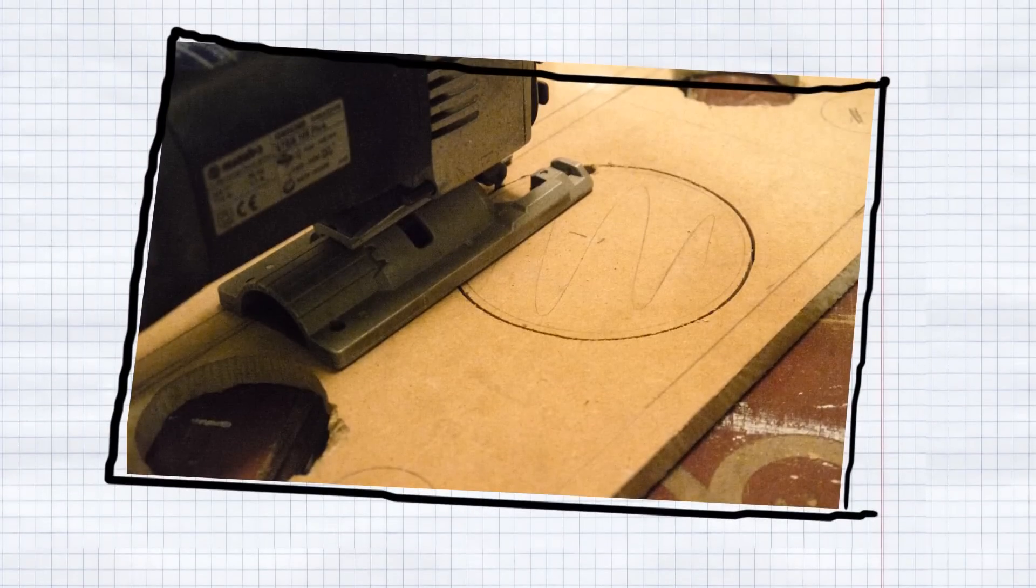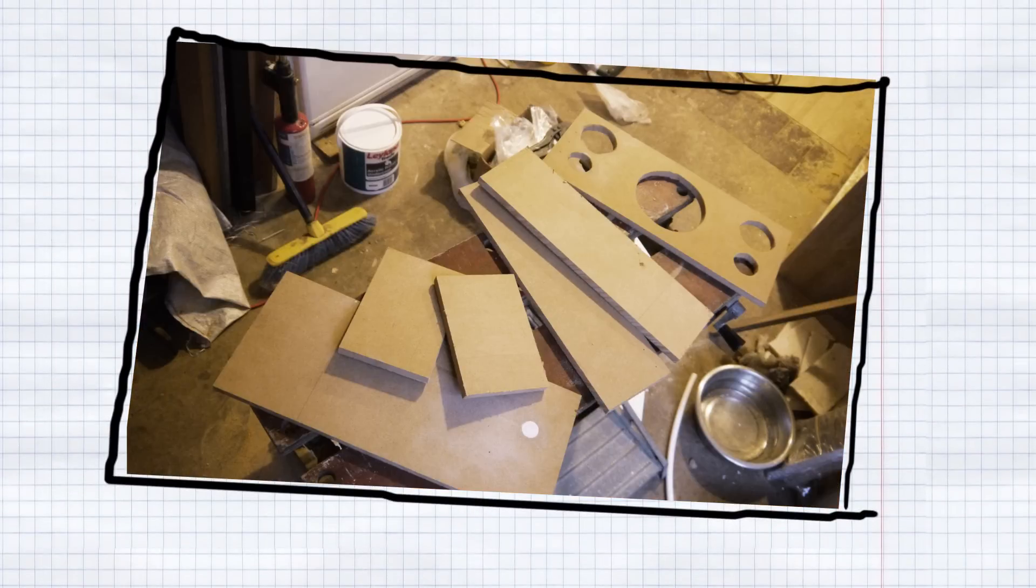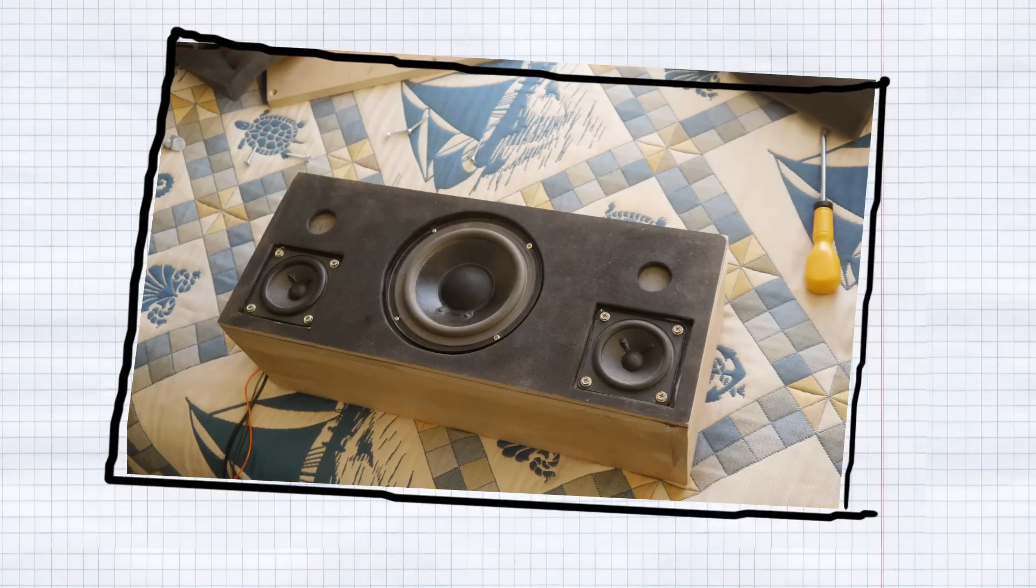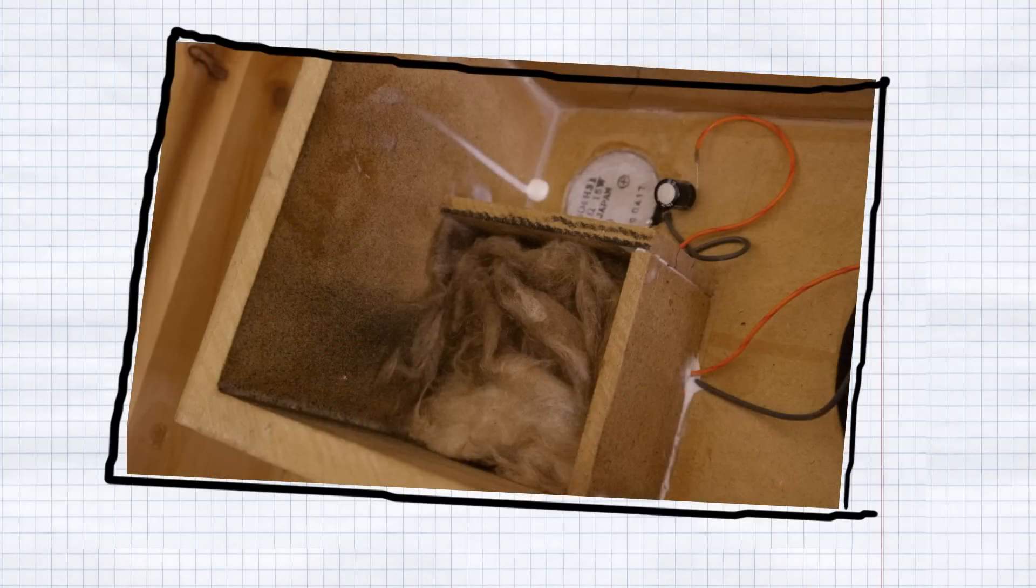Next, it was time to make the enclosure. I used 12mm MDF sheets. MDF is dense, which is great for speakers, and it's also easy to work with. Before I boxed in the mid-range drivers, I added some dampening, which was actually just roof insulation.